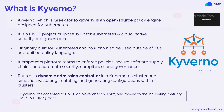So what is Kyverno? Kyverno, which means 'to govern', is an open-source policy engine designed for Kubernetes. It is a CNCF project purpose-built for Kubernetes. All the manifest files that you try to create — Kyverno can scan them, block them, or mutate them depending on the policies that you write. It is a cloud-native security and governance engine originally built for Kubernetes, but now can also be used outside of Kubernetes as a unified policy engine.